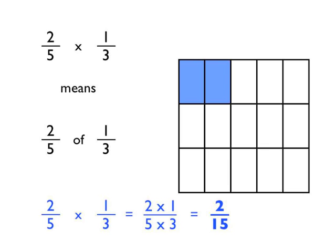So if you look at the bottom row of calculations here, you'll see that 2 fifths times 1 third is equal to 2 fifteenths.